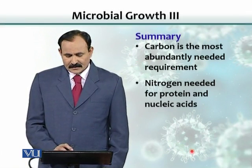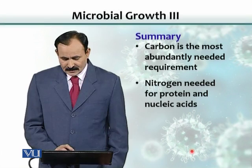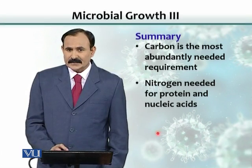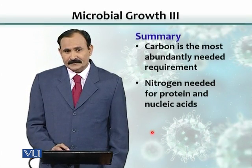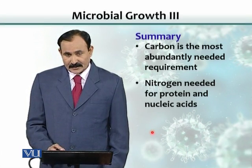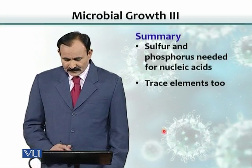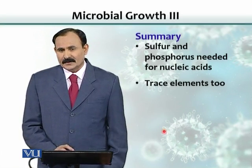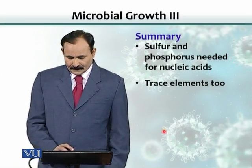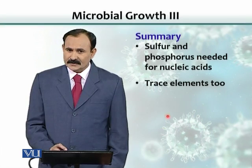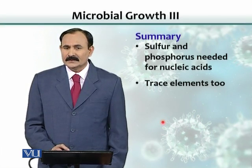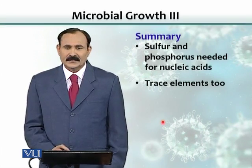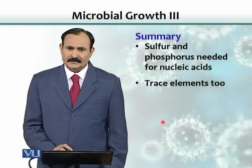In summary, carbon is the most abundantly needed requirement, followed by nitrogen, which is used for protein and nucleic acid synthesis. Sulfur and phosphorus are also needed for nucleic acids and proteins. Trace elements are also required, although we don't specifically add them to the medium — they're assumed to be present in the other nutrient substances used for bacteria.